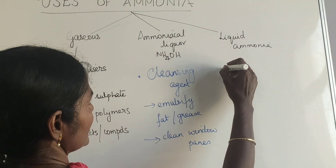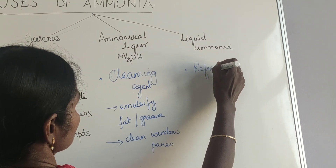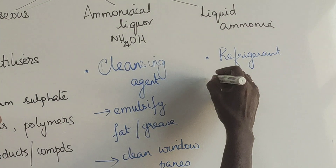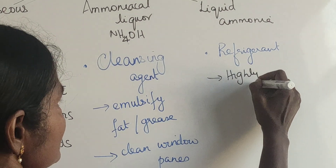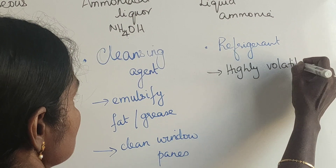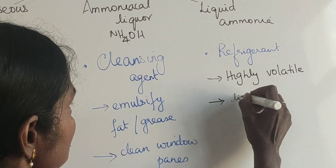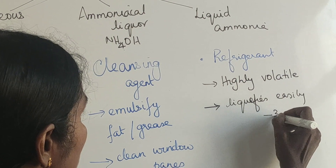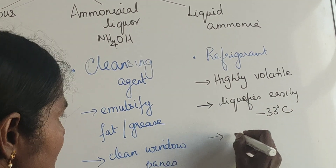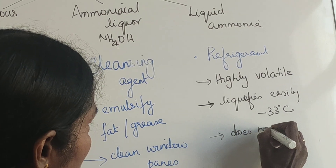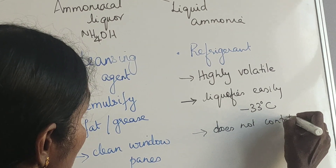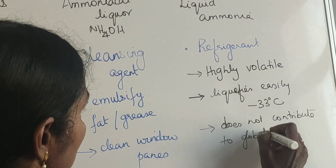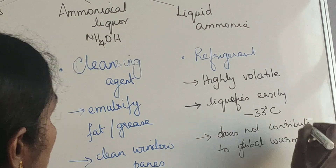Coming to liquid ammonia, it is used as a refrigerant. This is because of certain advantages: ammonia is highly volatile and evaporates easily, it liquefies easily at minus 33 degrees, and it does not contribute to global warming — which is very important in today's world. Because of these advantages, it is used as a refrigerant.